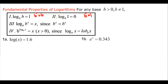Property 3 states log base b of b to the x is just equal to x. Converting it, we have b to the x equals b to the x — they are the same thing. So when the bases are the same, the exponent is the solution, which is just x.